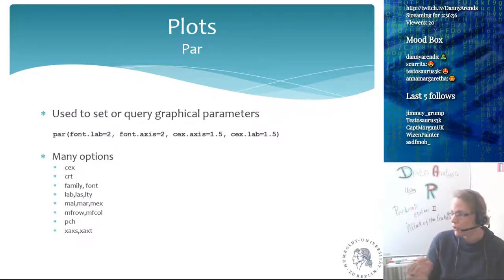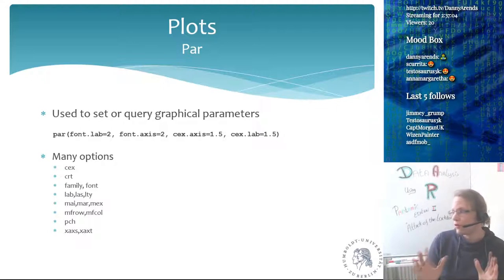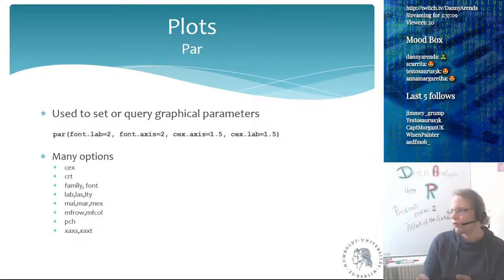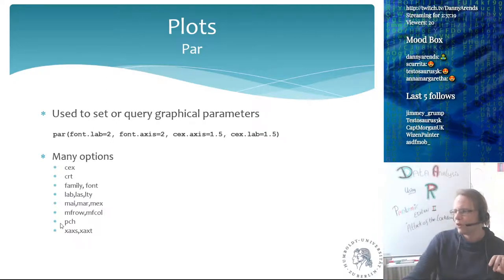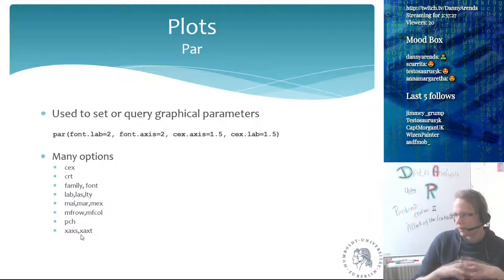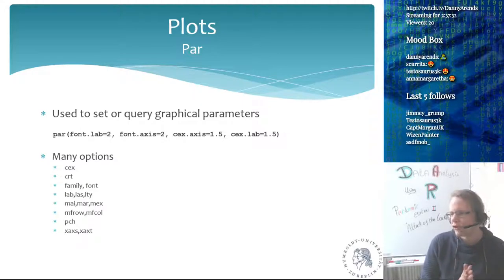If you want to know what you can set, just type ?par in R and it will give you an overview of all the different options. It even includes images showing things like inner and outer margins, max (margin between two plots), PCH (point size), axis types, and so on — around 160 options in total.